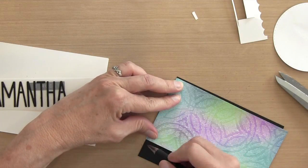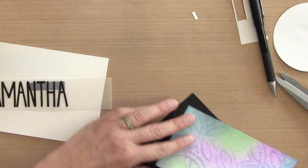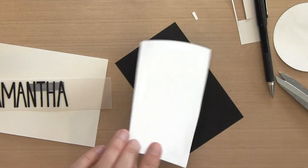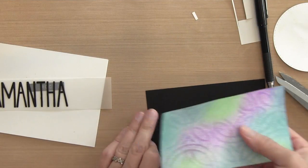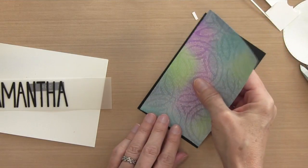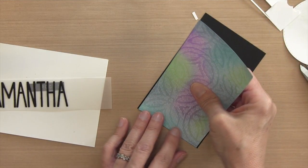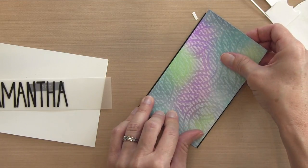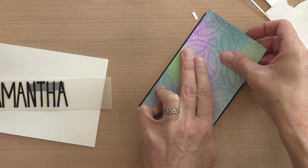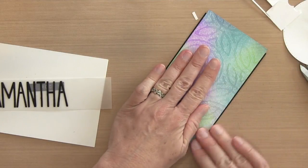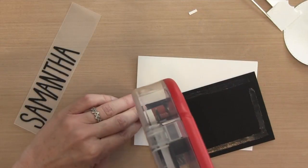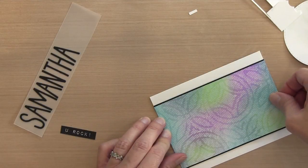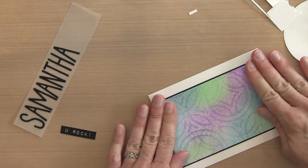I trimmed the watercolor panel to about three and a quarter inches high, and I thought that a black mat would really make this panel stand out. So I just kind of eyeballed about a sixteenth of an inch or so on the top and the bottom. And then I cut that piece of black cardstock, which is Stampin' Up cardstock, and then I just adhered it with an ATG tape runner. And I think that really made a difference with these colors is to have that black, and plus it ties in the black sentiment and the name.